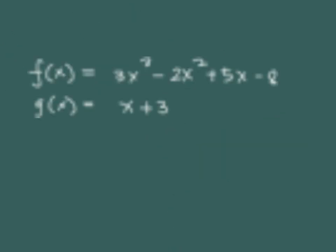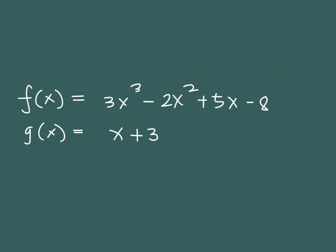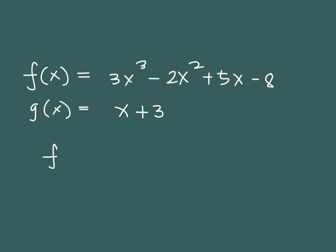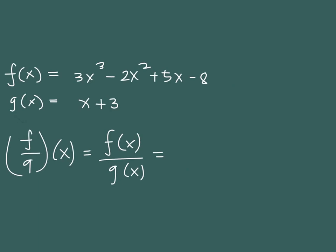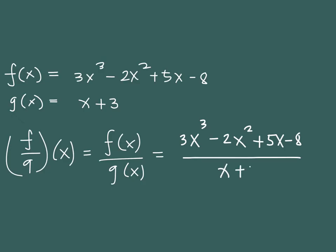Now suppose you have f of x equals 3x cubed minus 2x squared plus 5x minus 8, and g of x is equal to x plus 3. If we look for f over g of x, which means f of x over g of x, then all we have to do is place the f of x expression 3x cubed minus 2x squared plus 5x minus 8 in the numerator, and g of x which is x plus 3 in the denominator.